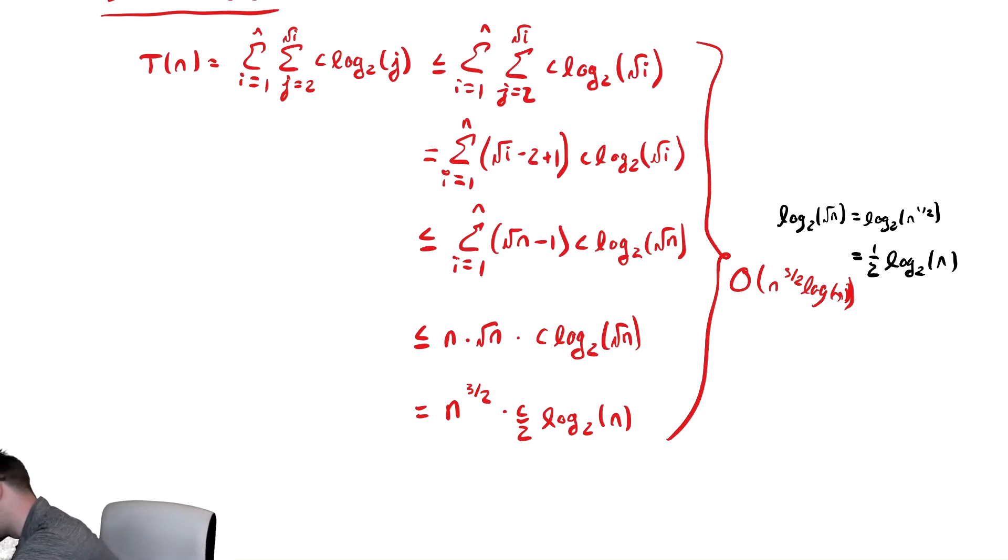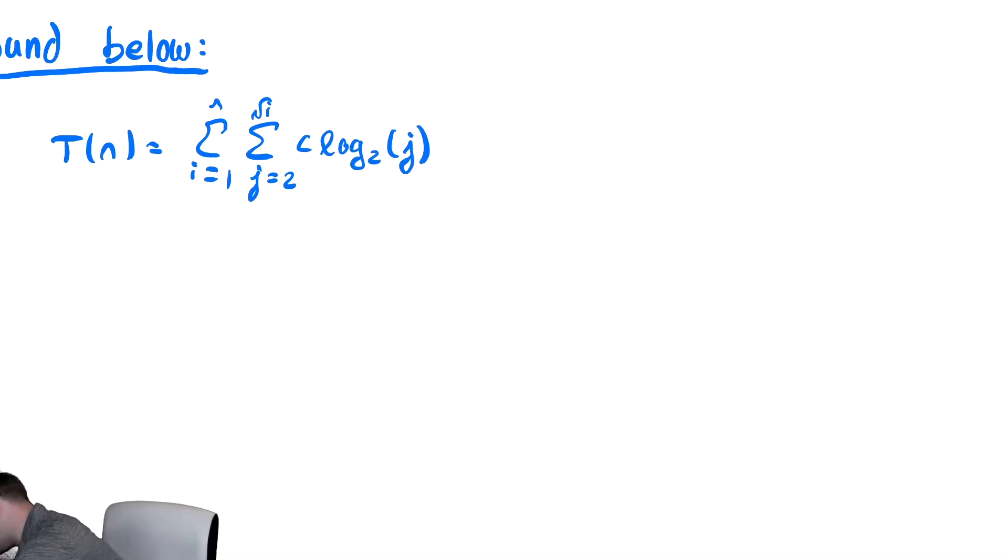We need to now bound below in the exact same way. So let's create our duplicate page and go down there. So we're going to bound below. Let's write that down for the reader so they know what the heck's going on. We bound below. And just as I did in the previous problem, I decided to copy paste ahead of time and recolor it for myself.